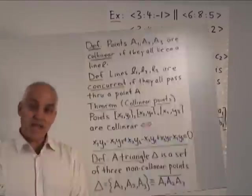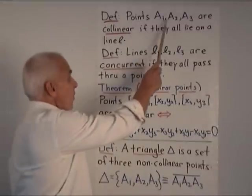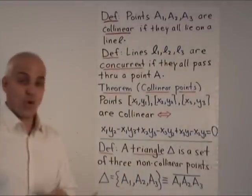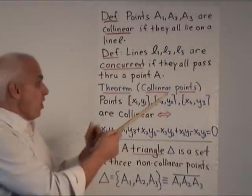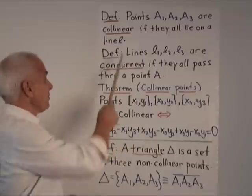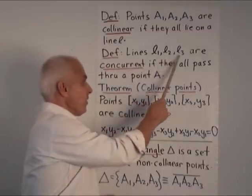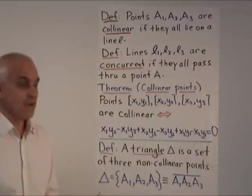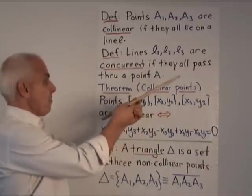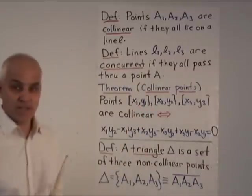We say that three points A1, A2, and A3 are collinear if they all lie on a single line L. We say three lines L1, L2, and L3 are concurrent if they all pass through a given point A.